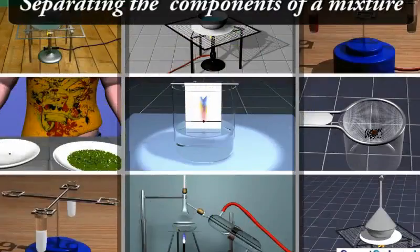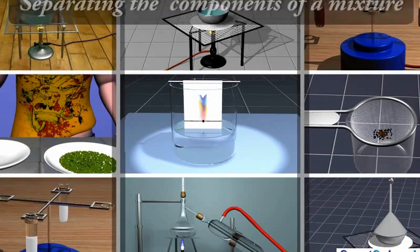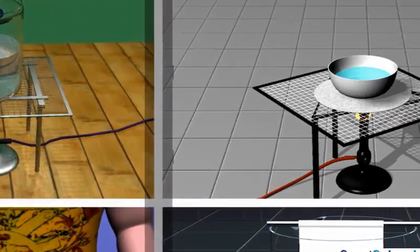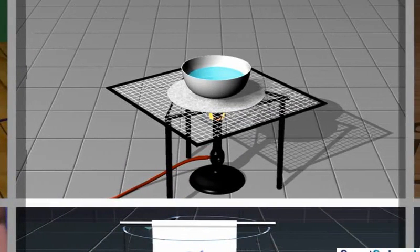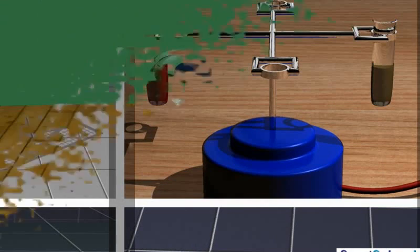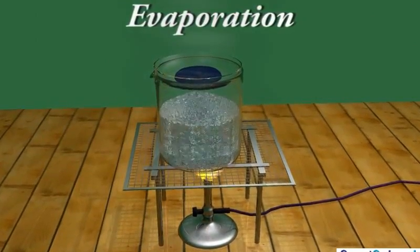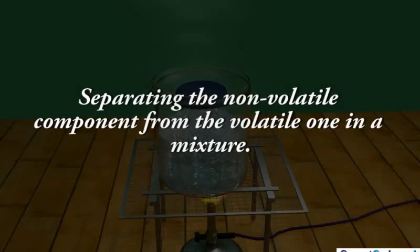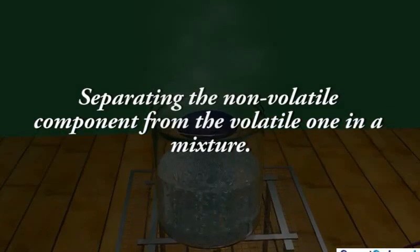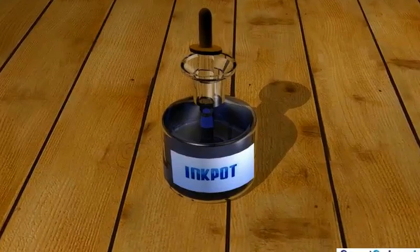We already know that a mixture can be separated into its constituent components by various different techniques. Let us now discuss these techniques one by one and see how they can be employed for the separation of a mixture's components. Let us learn about evaporation in this module. This process can be employed for separating the components of a mixture where one component is volatile and the other is non-volatile.